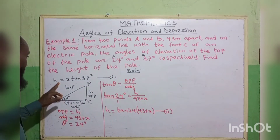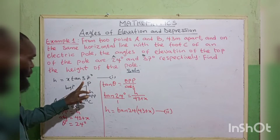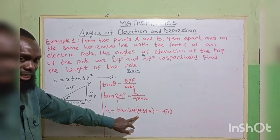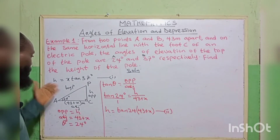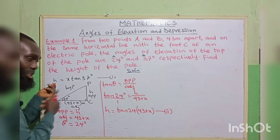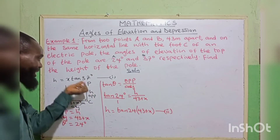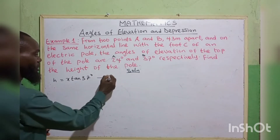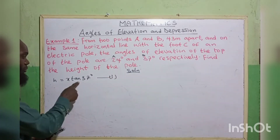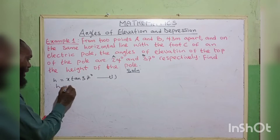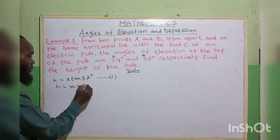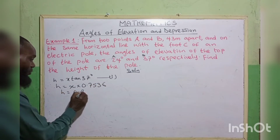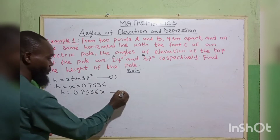Equation 1: H = X × tan(37°). Equation 2: H = tan(24°) × (43 + X). Since both are equal to H, we equate them. Finding the value of tan(37°) = 0.7536, so equation 1 becomes H = 0.7536X. For equation 2, tan(24°) = 0.4452, so H = 0.4452 × (43 + X) = 19.14 + 0.4452X. This is equation 2.